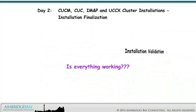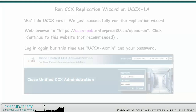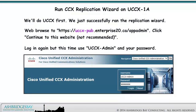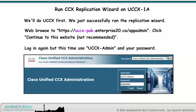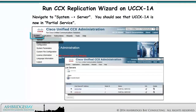Is everything working? We'll do some final checks to make sure we're good to go. We'll do UCCX first — we just successfully ran the replication wizard. Web browse to this address, click Continue to this website, and log in using UCCX Admin and your password. Navigate to System > Server. You should see that UCCX 1A is now in partial service.